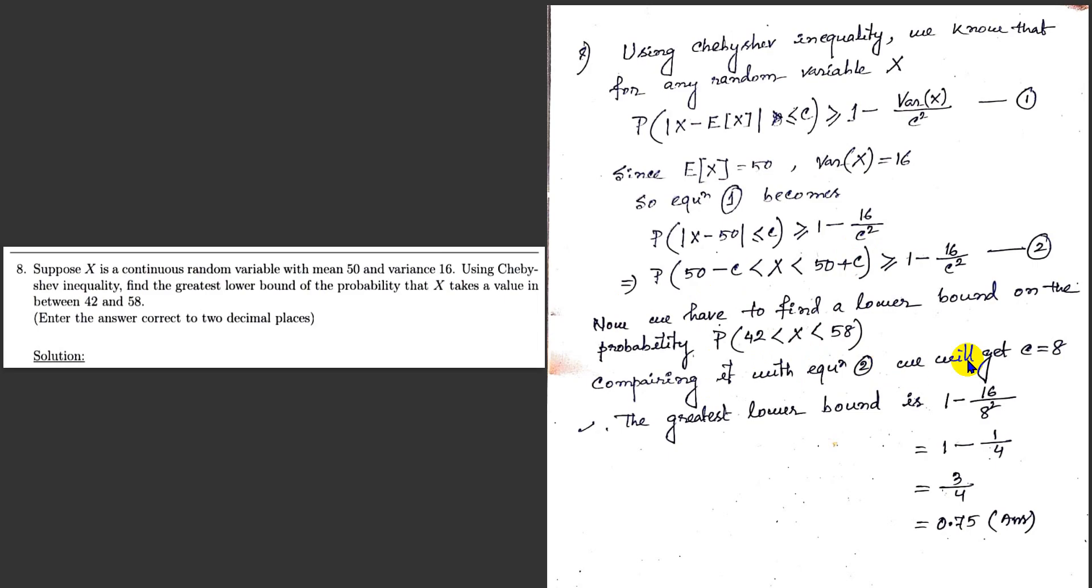So putting this value of c, that is c equal to 8 in equation 2, here we get the greatest lower bound, which is 1 minus 16 by 8 squared. We get 3 by 4 and the ultimate answer is 0.75. Thank you.